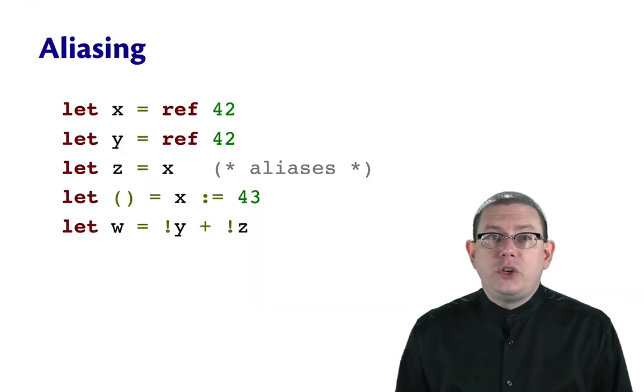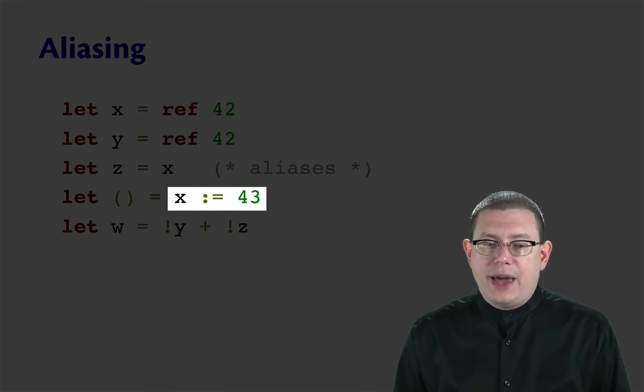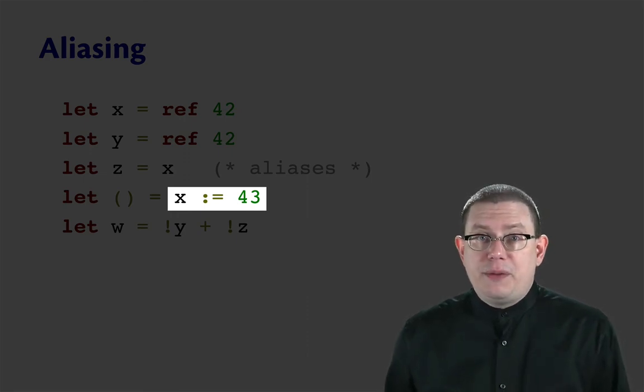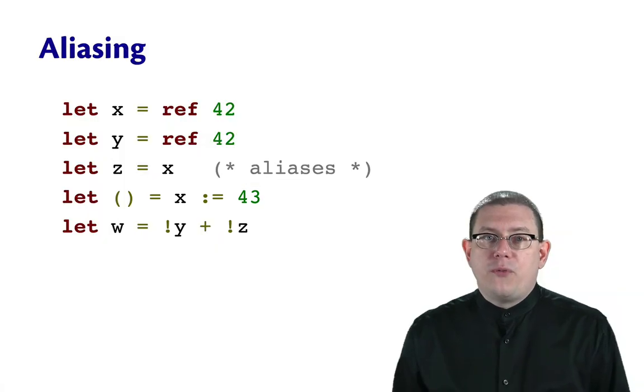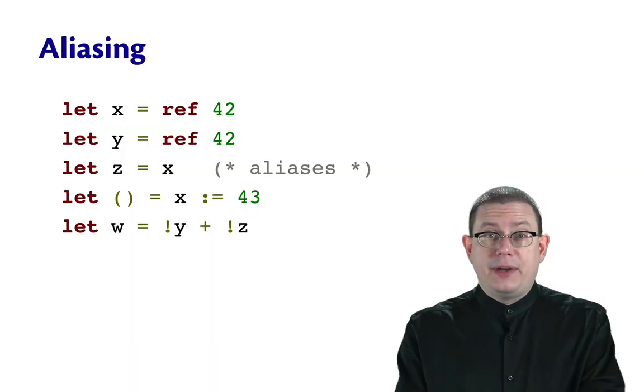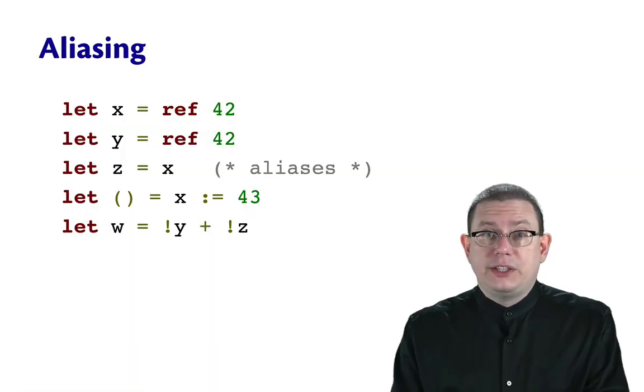So if I use assignment to update the contents of x to be 43, that simultaneously updates the contents of z to be 43 because they are the same location in memory. Therefore, when I dereference y and z to add them together, I will not get 84, I will get 85 as a result of this code. Let's check that.